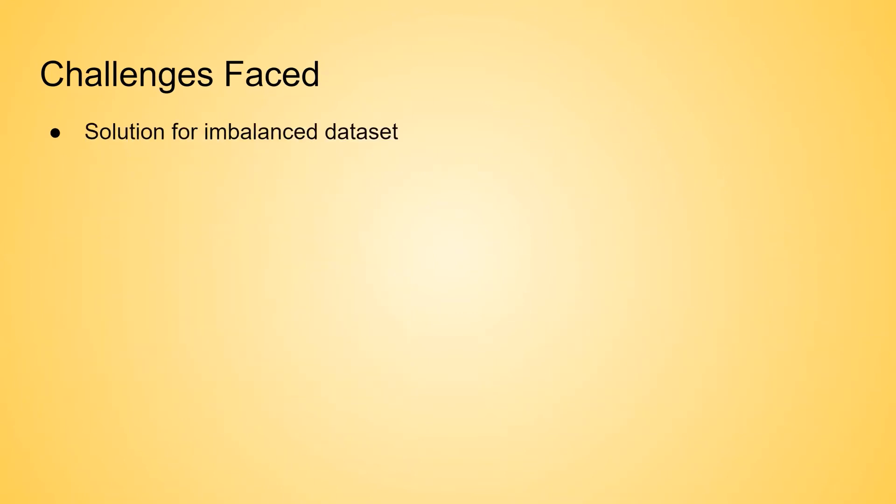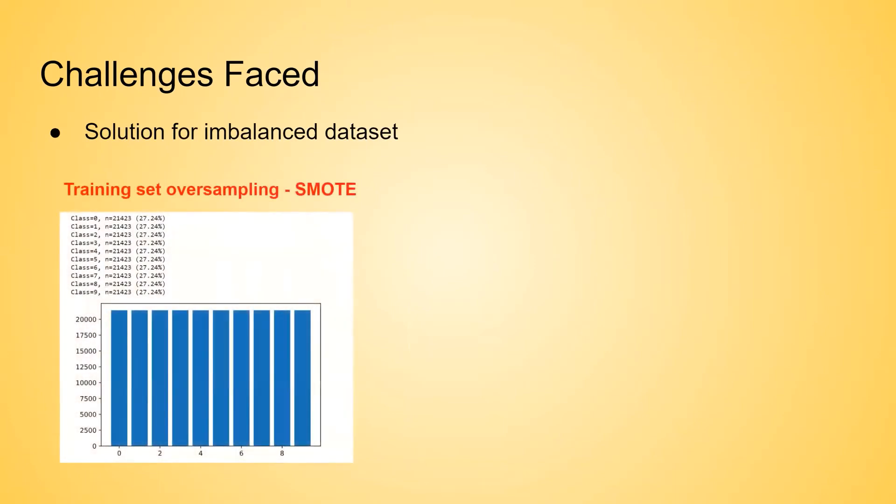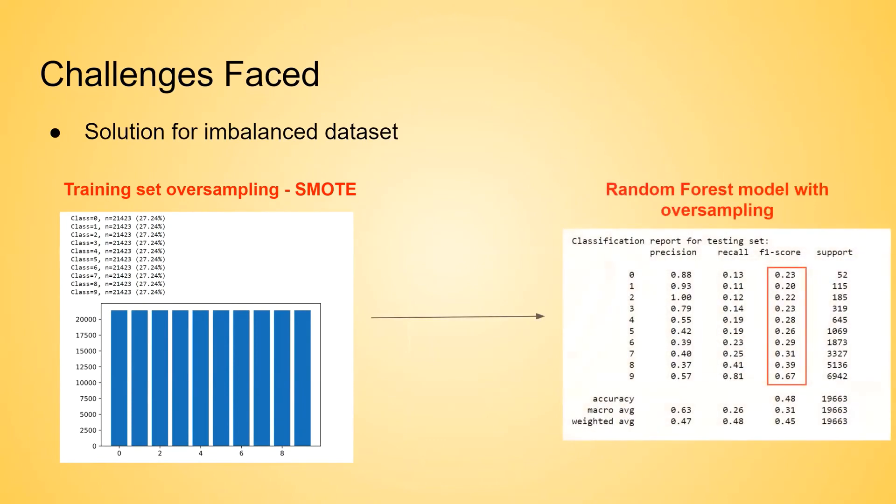The solution for imbalanced dataset is oversampling. Here, before we pass the training set into the model, we oversample all ranges in the training set so that all ranges have the same amount of sample size, so that we can prevent the model learned from only majority data. This is the result after applied oversampling technique. Compared to the previous model, this model from range 0 to range number 4 is getting higher accuracy than the previous model, and the overall accuracy score has also increased.